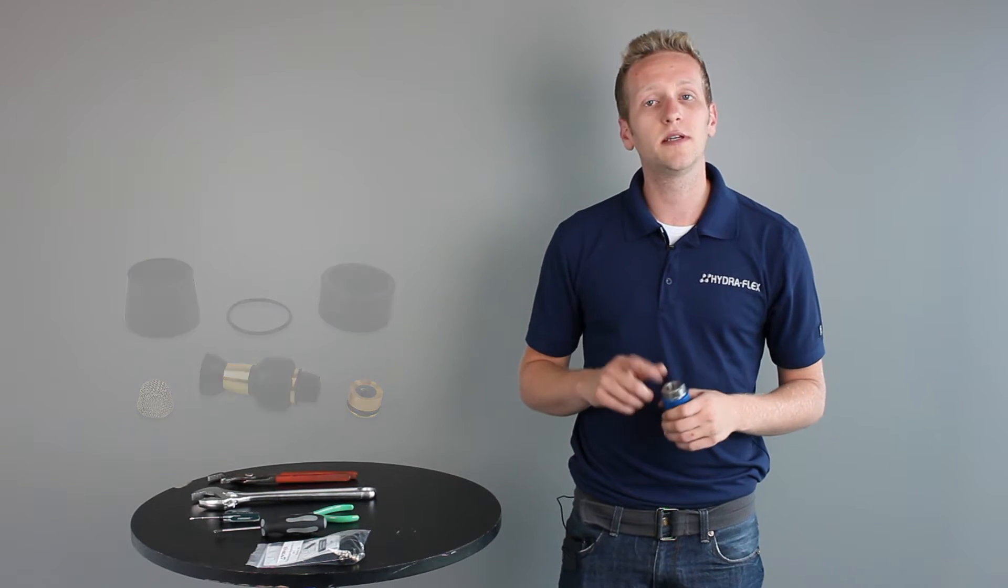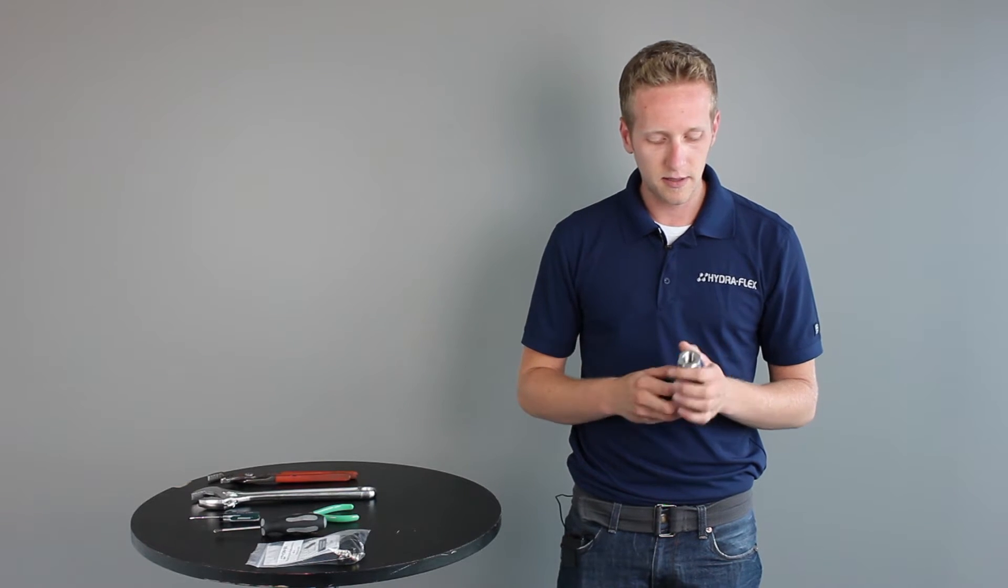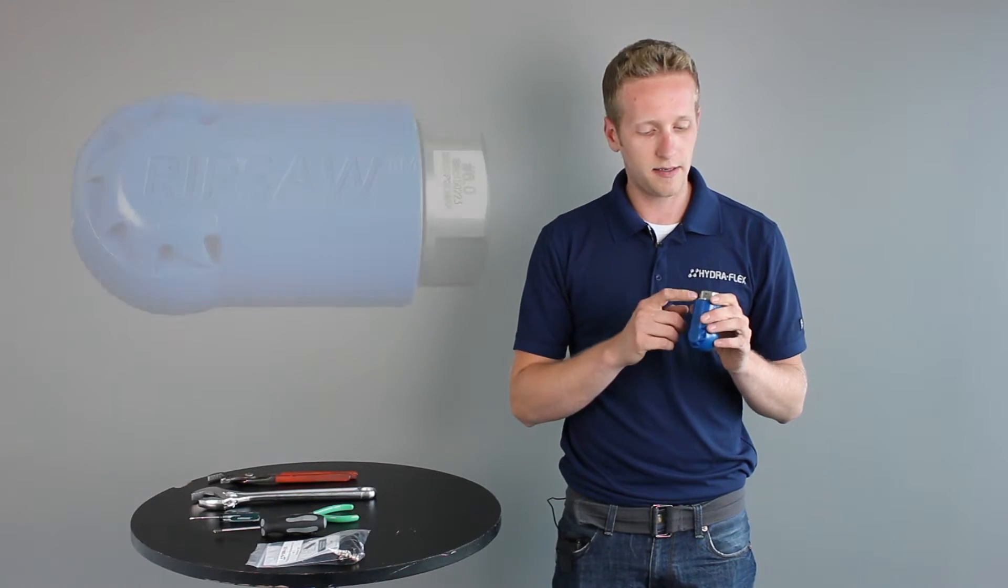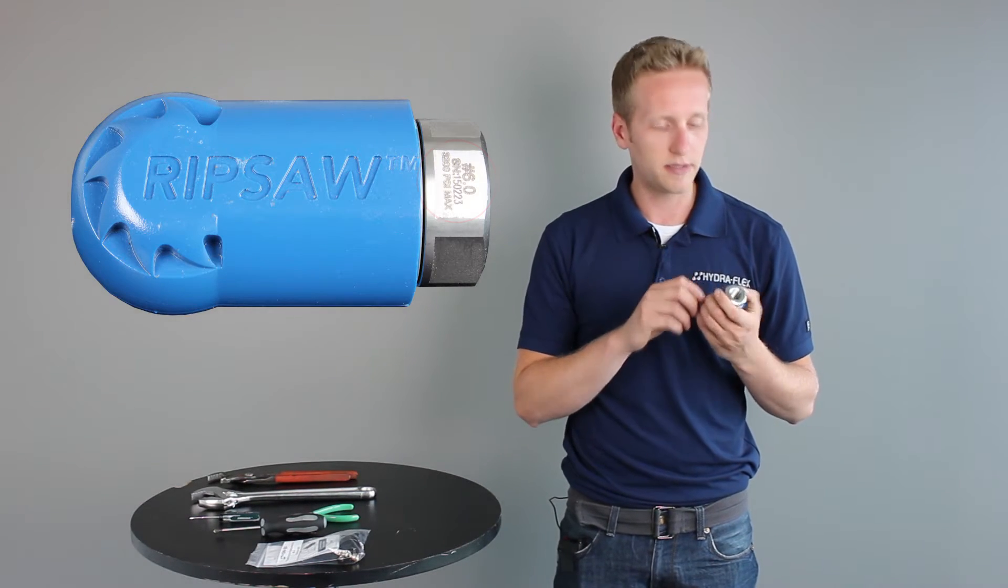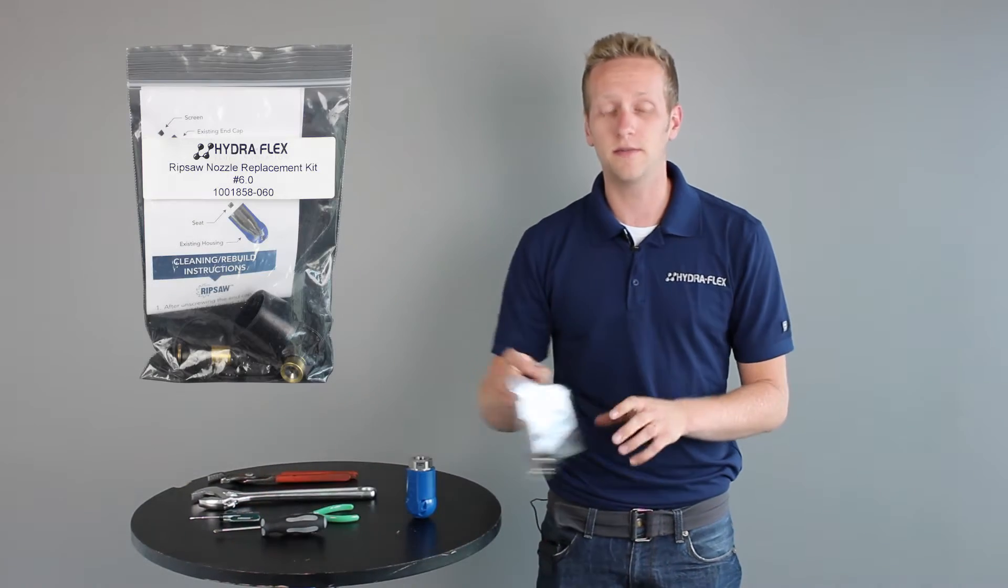Before we get started you will need to know a few things. When ordering your repair kit, you will need to order the same nozzle size repair kit as your nozzle. The nozzle size can be found on the end cap, laser engraved. This one is a number 6.0 so we know we have to order up a number 6.0 nozzle repair kit.